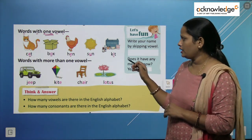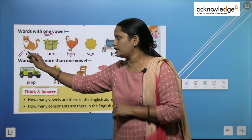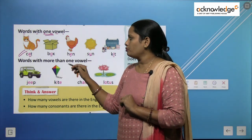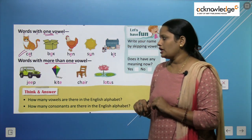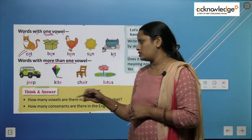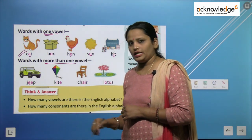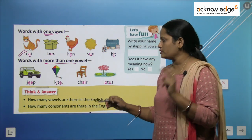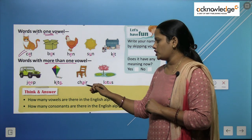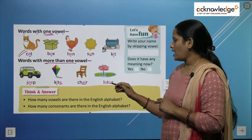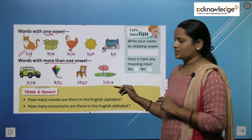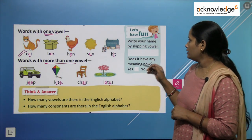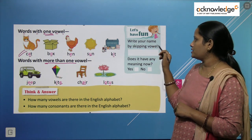In these words there is only one vowel each. Now, words with more than one vowel: J-E-E-P — jeep, two vowels; K-I-T-E — kite, two vowels; C-H-A-I-R — chair, two vowels; and L-O-T-U-S — lotus, two vowels.